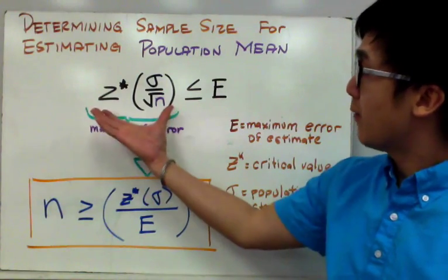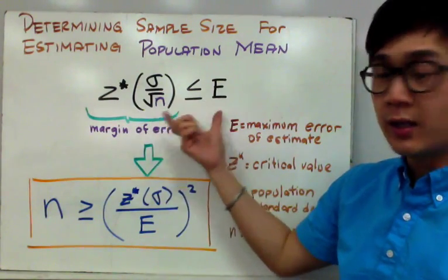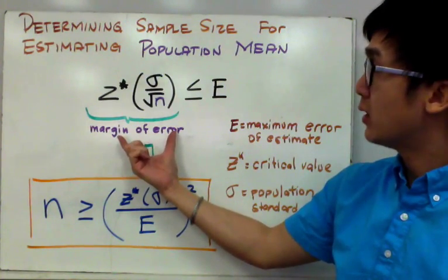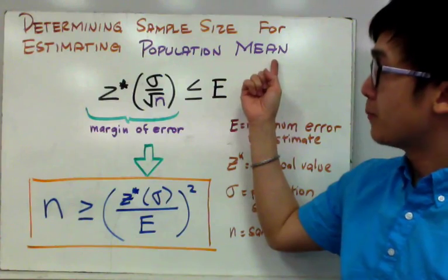This particular formula right here is very familiar because this is the formula for the margin of error in our confidence interval in estimating the population mean.